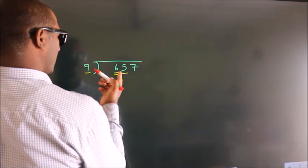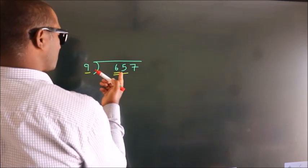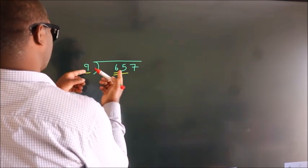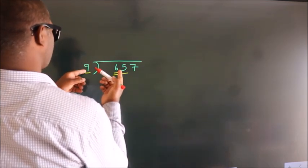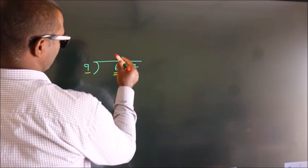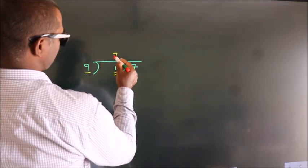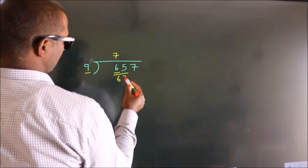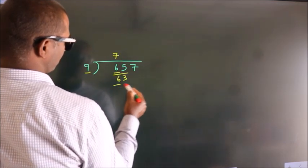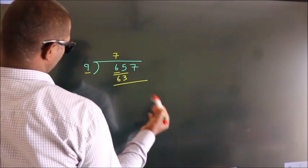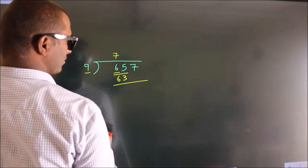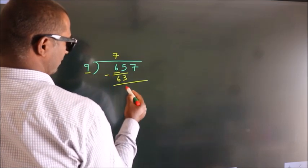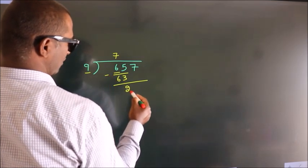A number close to 65 in the 9 times table is 9 sevens, which is 63. Now we subtract, and we get 2.